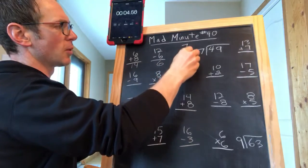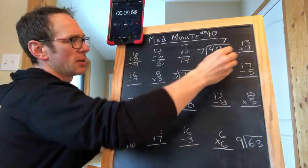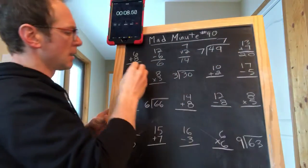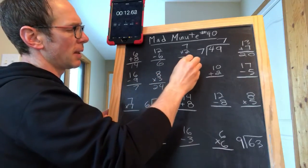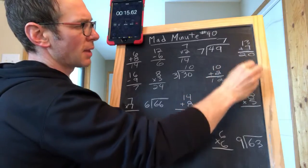7 times 2 is 14, 49 divided by 7 is 7, 13 plus 7 is 20, 16 minus 9 is 7, 8 times 3 is 24, 30 divided by 3 is 10, 10 plus 2 is 12, 17 minus 5 is 12.